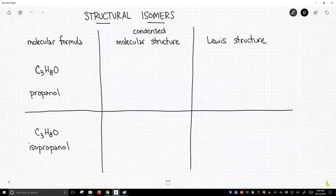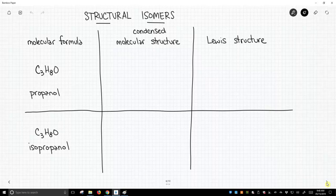Isomers arise when you have two molecules that have the same molecular formula and yet different connectivity, different connections between the atoms.